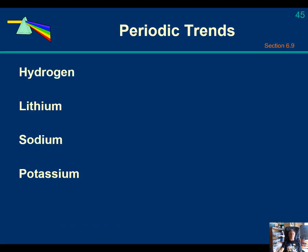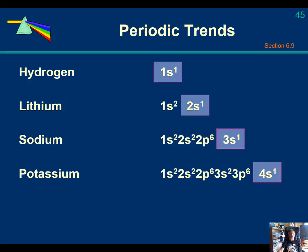Periodic trends. So here are some electron configurations for different elements. We see hydrogen, lithium, sodium, potassium. These are all alkali metals. Notice that they all have the same valence shell electron configuration.